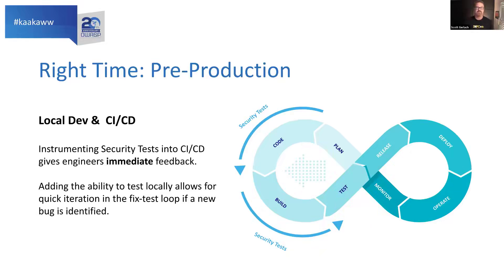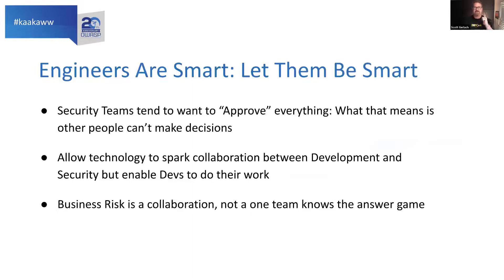Lots of our customers check for security bugs on every PR or MR, and that gives test information directly back to engineers as they're working. Engineers are smart — people writing software to create value are really smart. Let them be smart. Security teams tend to want to approve everything, which means other people can't make decisions; you've taken them out of the decision loop entirely. Allow technology to spark collaboration between development and security, but enable developers to do their work, self-serve, and figure out and fix problems. If they make the wrong decision, that's okay too — they've made a documented decision, so you can have a conversation about why you think it might be wrong.